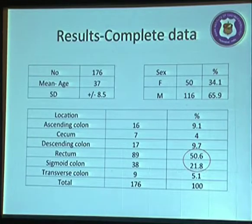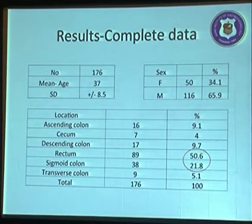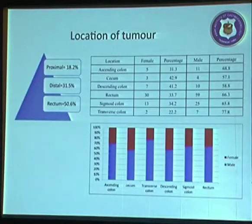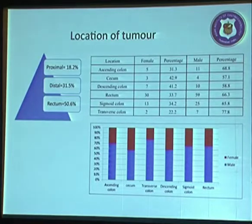Regarding the entire population of 176 patients studied, the mean age was 37 years with a standard deviation of 8.5 years. The population was predominantly male, comprising approximately 65%, and the tumour location was predominantly recto-sigmoid. Male population was predominant, comprising almost two-thirds of the patients.